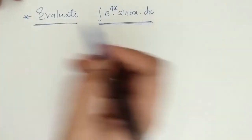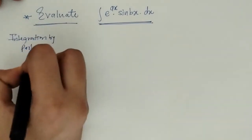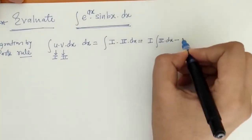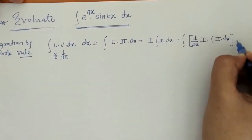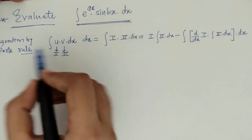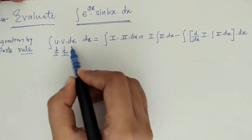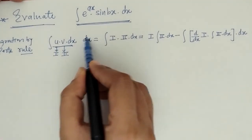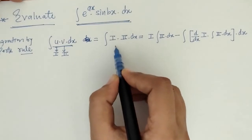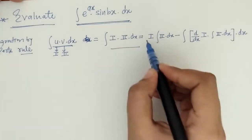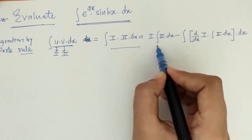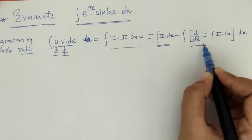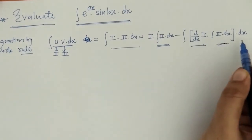First we will write down the integration by parts rule. Here we have the rule for two functions of variable x: the first function times the integration of the second, minus the integration of the derivative of the first function times the integration of the second function.